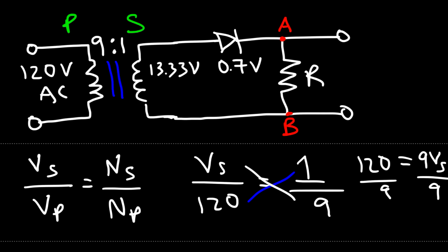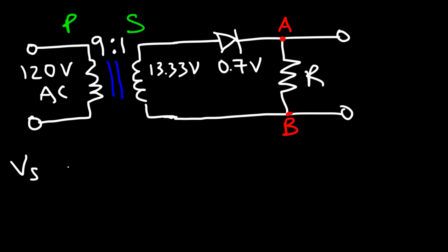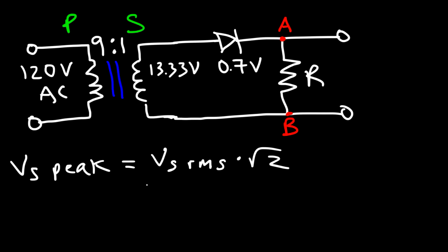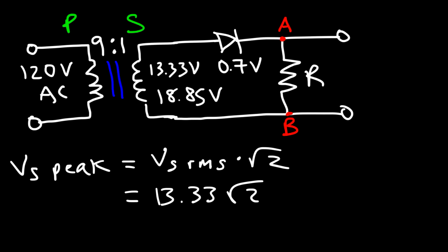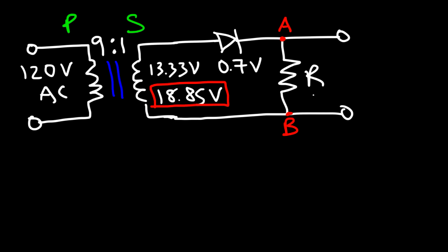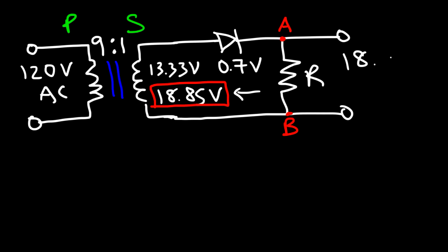Next, we need to calculate the peak voltage. The peak secondary voltage equals the RMS value times the square root of 2. So that's 13.33 volts times √2, which is approximately 1.4142 — giving us 18.85 volts as the peak secondary voltage of the transformer. Now we subtract the voltage drop across the diode, which is 0.7 volts, giving us a peak voltage across the resistor of 18.15 volts.